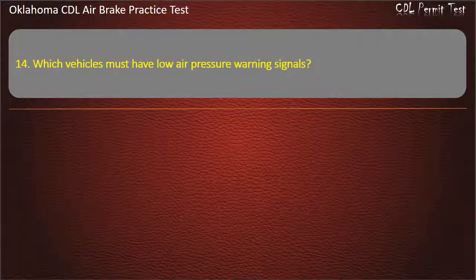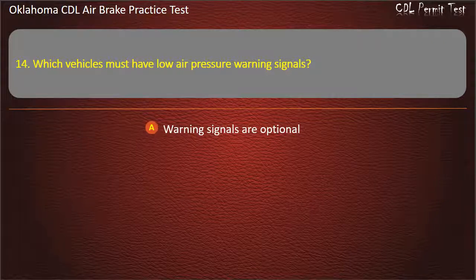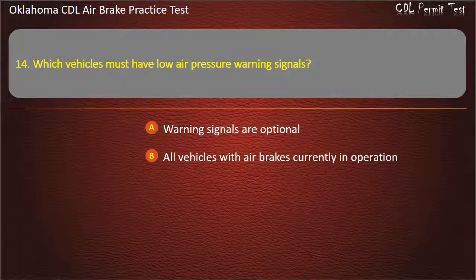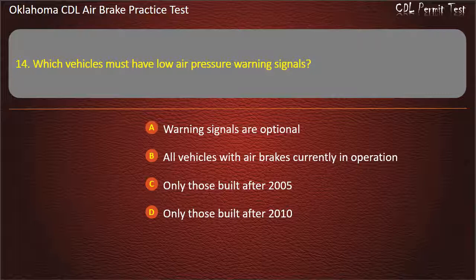Question 14. Which vehicles must have low air pressure warning signals? Warning signals are optional; all vehicles with air brakes currently in operation; only those built after 2005; or only those built after 2010. Answer: All vehicles with air brakes currently in operation.